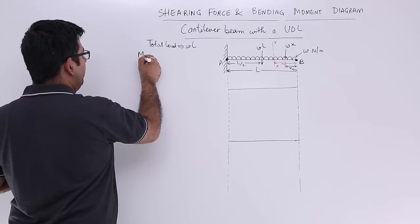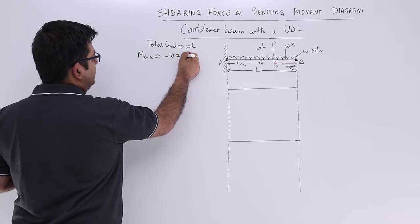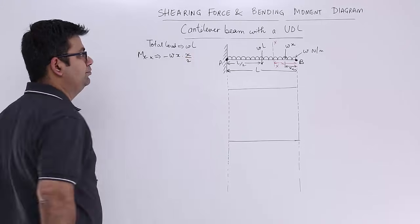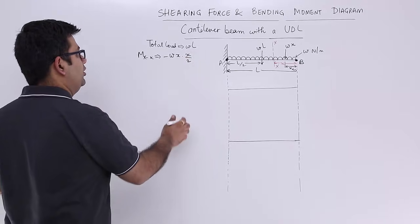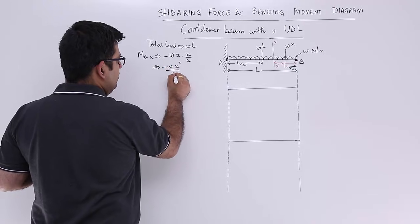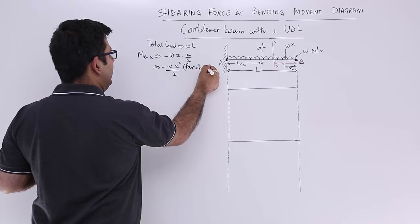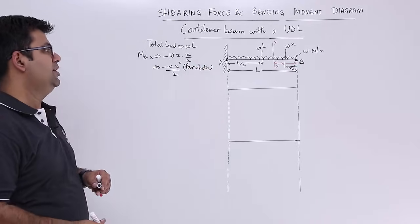So what is the bending moment at point XX? It will be minus Wx into x by 2, isn't it? So this will become minus Wx square by 2, which shows a parabolic variation of the bending moment.